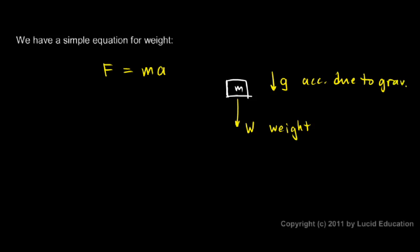Well, if the force on the object is the object's weight, and the acceleration on the object is the acceleration due to gravity, which we call G, and the mass of the object is just M, then we get this equation, W equals MG. That's our equation for weight.